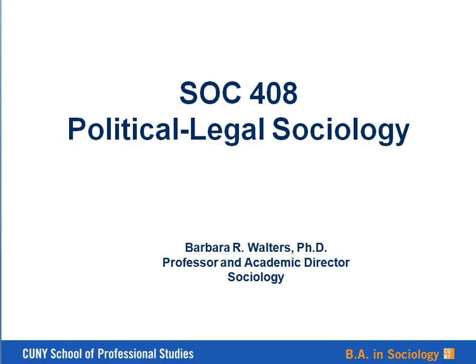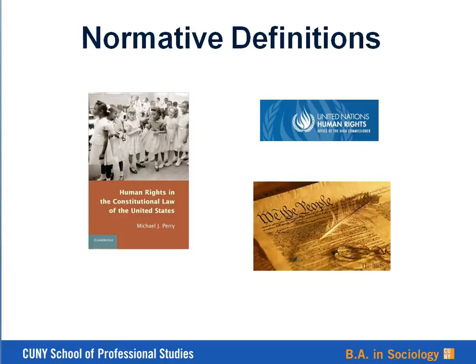This unit may be the most difficult in terms of reading level, but the assigned book, Human Rights and the Constitutional Law of the United States by Michael J. Perry, provides a highly informative analysis of human rights, international conventions, and constitutional law in the United States at a rather crucial moment in our history. For this reason, the reading assignments are spread across a four-week period and are integrated with an activity related to the United Nations conventions introduced in chapter two.